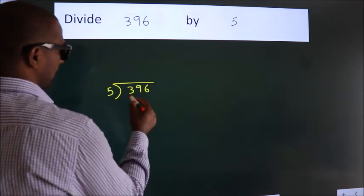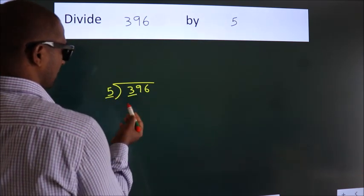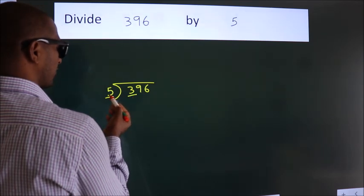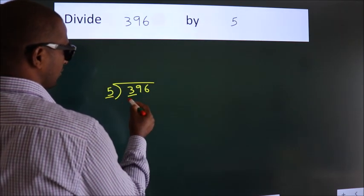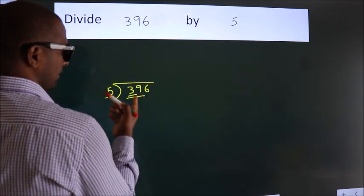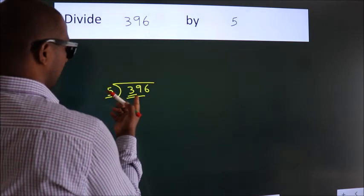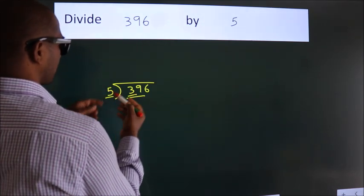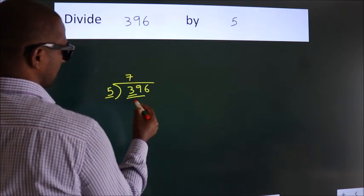Here we have 3, here 5. 3 is smaller than 5. So we should take 2 numbers, 39. A number close to 39 in 5 table is 5 7s 35.